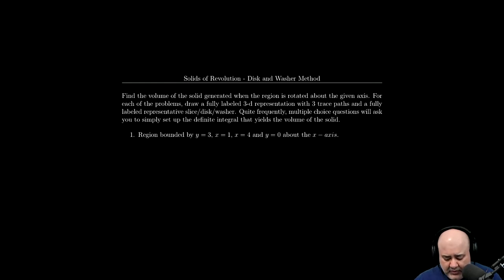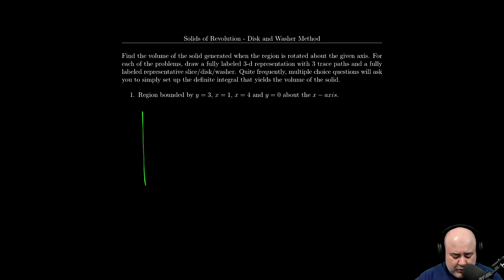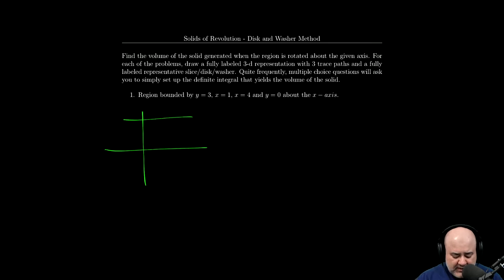So the first thing I prefer to do in these problems is to draw a very rough sketch of the region that I'm looking at. So this is my xy plane, y equals 3 is some horizontal line, x equals 1 is a vertical line, x equals 4 is a vertical line. So this region is going to get spun about the x-axis.